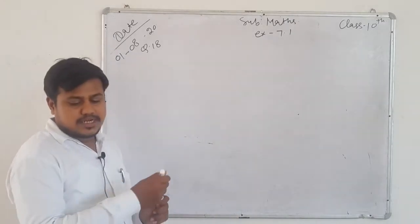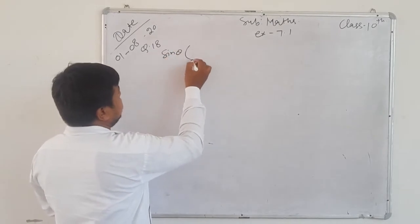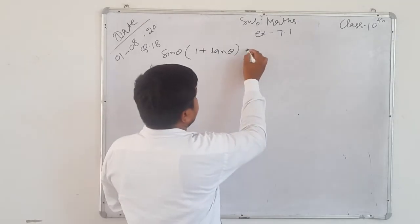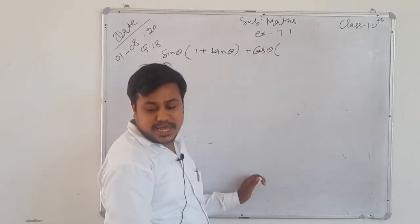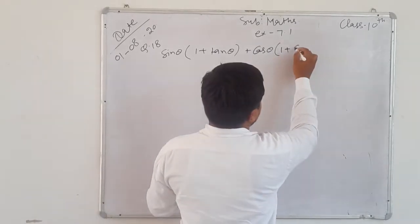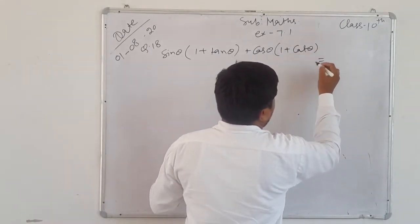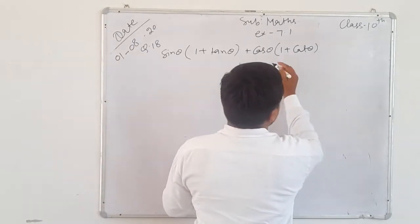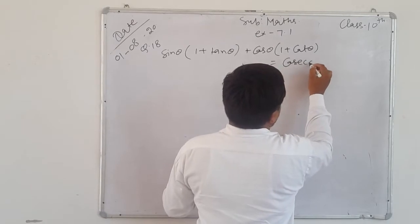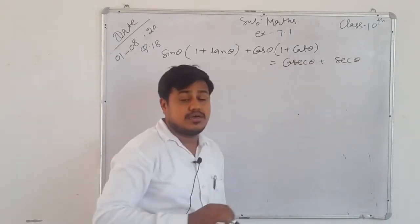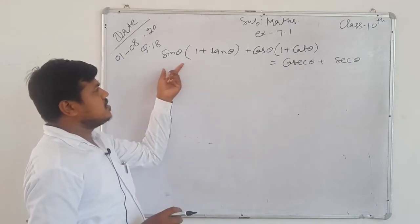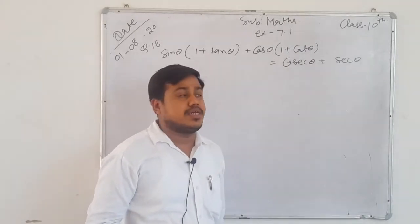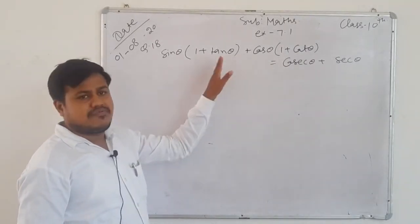Question 18 is: sin θ(1 + tan θ) + cos θ(1 + cot θ). You can write it as equal to cos θ + sec θ. So how do we do this question? The question is sin θ(1 + tan θ) + cos θ(1 + cot θ). Left hand side.